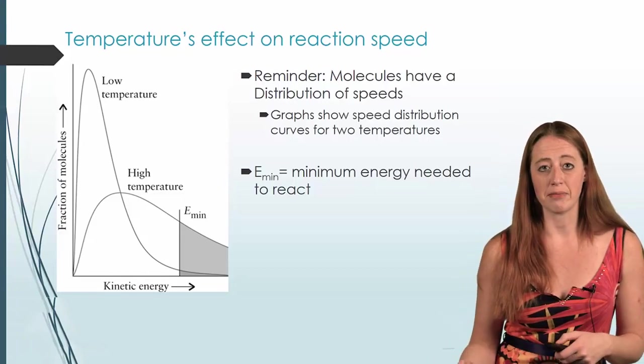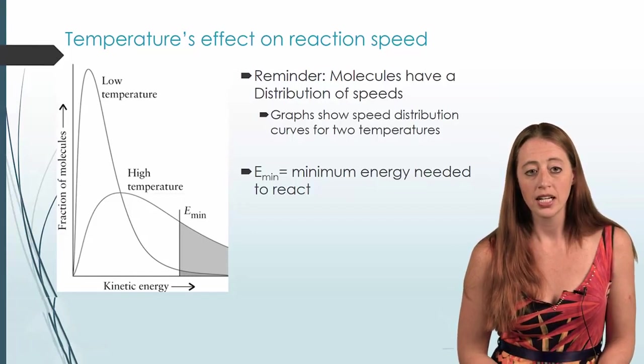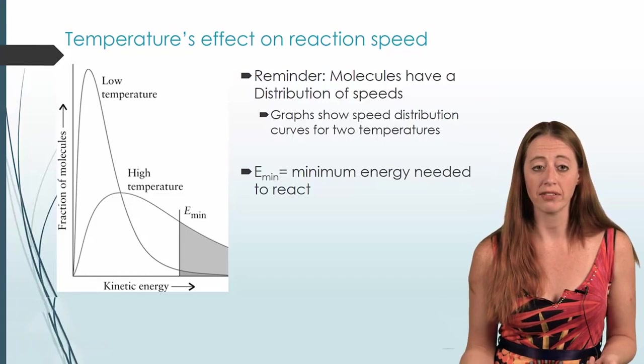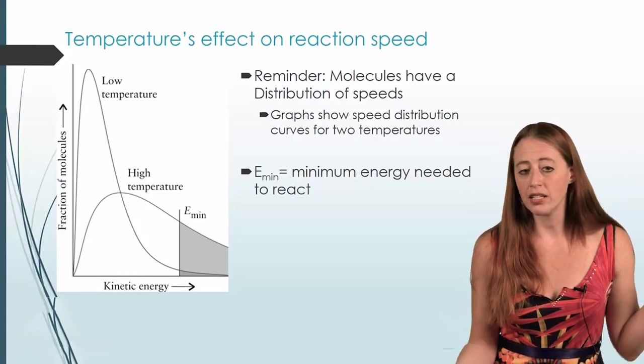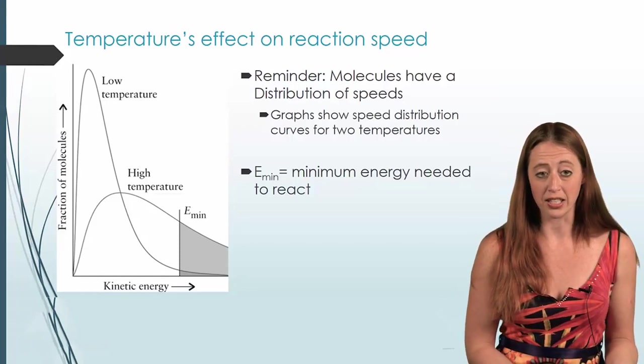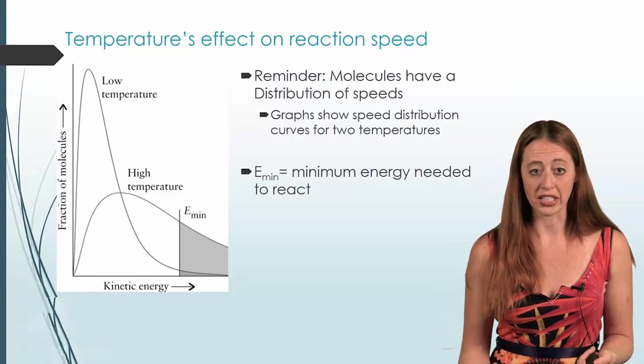Compare that to the high temperature one. Now trace the high temperature graph. When you get to the E_min, we have a significant portion above that line. Instead of maybe two to five percent of your collisions causing a reaction like in the low temperature one, now maybe we're at twenty percent of our collisions causing a reaction.